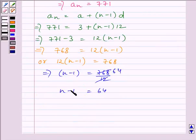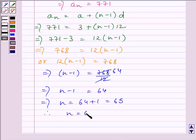So we get (n-1) is equal to 64, or n is equal to 64 plus 1, equal to 65. So n is equal to 65.